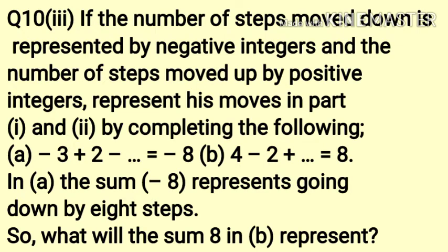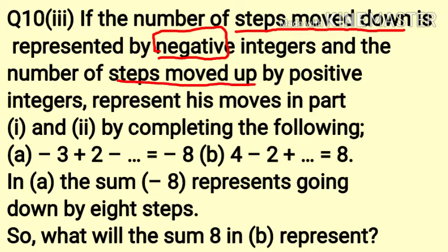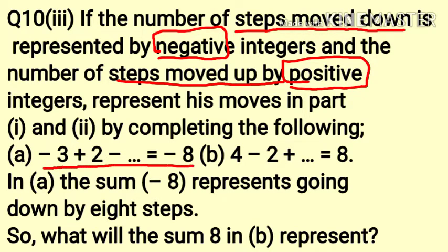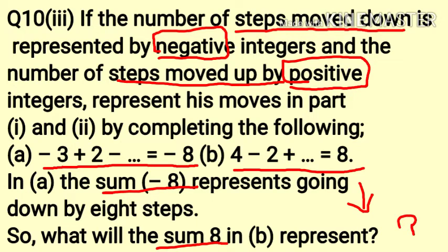Let's read the third part of question number 10. If the number of steps moved down is represented by negative integers and the number of steps moved up by positive integers, represent his moves in part 1 and 2 by completing the following. In part A, the pattern given shows the steps moved by the monkey in part 1, and in part B, the pattern given shows the steps moved by the monkey in part 2.